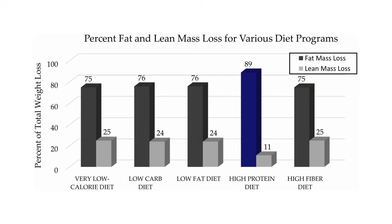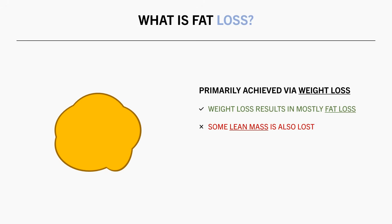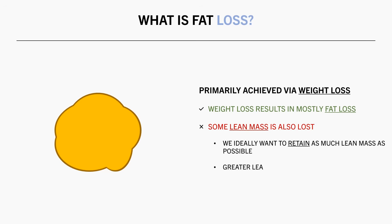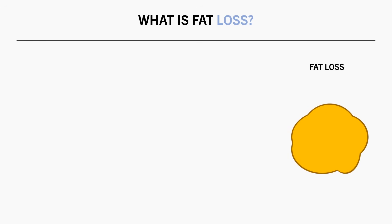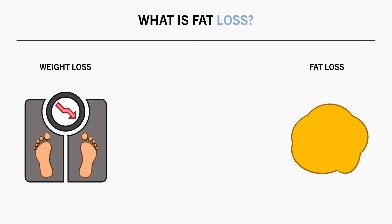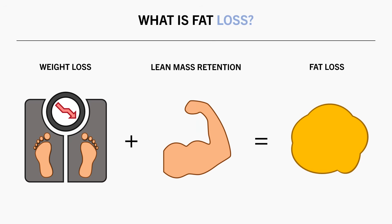While weight loss results in mostly fat loss, it is still a decent proportion of lean mass we are losing. We usually want to retain as much lean mass as possible during weight loss for aesthetic, health, and functional purposes. And if we can retain more lean mass, we increase the amount of fat lost as a proportion of total weight loss. So essentially the two primary components to maximize fat loss are: number one, weight loss, and number two, lean mass retention.